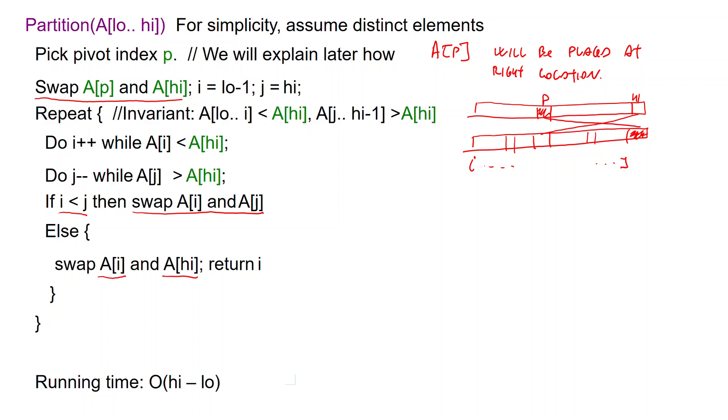Also, we can make a comment about the space. What's good about quicksort is that the space is also very small. It's constant. All these swaps are done in place. I do not need an additional array to perform partition, unlike what I needed for merge sort, where the merge operation required an auxiliary array.